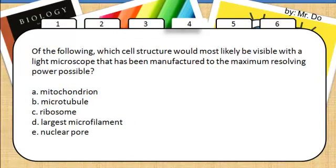4. Of the following, which cell structure would most likely be visible with a light microscope that has been manufactured to the maximum resolving possible power? That would be the mitochondria. In other words, with a microscope, what is the possible biggest structure in a cell in the list that you could see? That would be the mitochondria. Everything else is smaller than that.